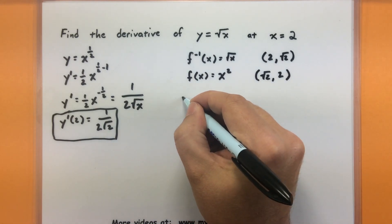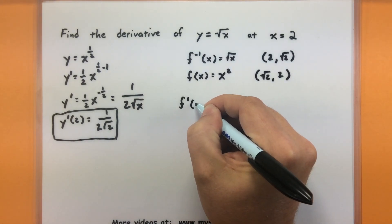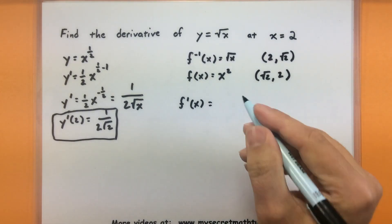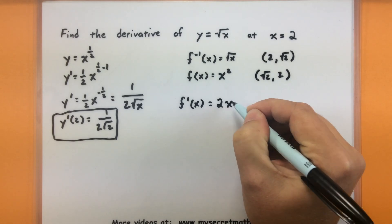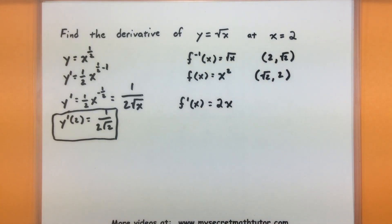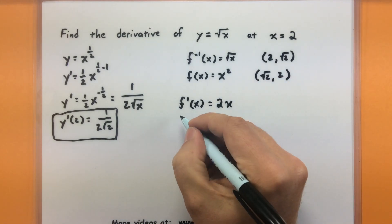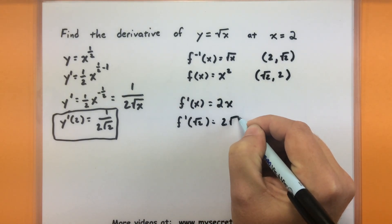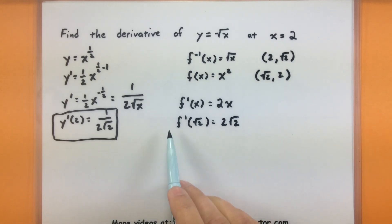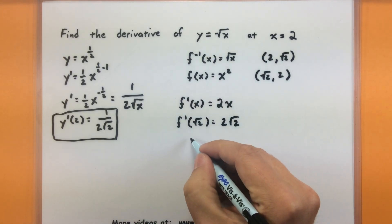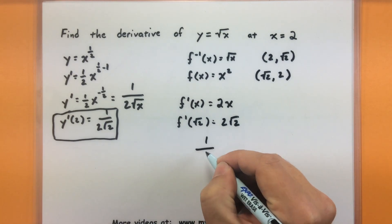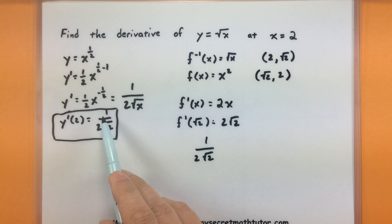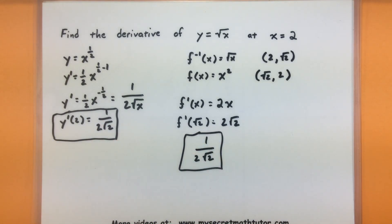Now that I have the corresponding point and the original function, all we need to do is take the derivative of x squared, plug in √2, and then take its reciprocal. The derivative of x squared: bring down the 2, reduce the power by one, giving 2x. Plugging in √2 gives 2 times √2. That is the derivative on the original at the point (√2, 2). Now the last step is to take the reciprocal, which gives 1 over 2√2 — and sure enough, that matches exactly what we had before. This shows the inverse derivative formula is consistent with all our other rules.